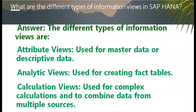What are the different types of information views in SAP HANA? The different types of information views are: Attribute views, used for master data or descriptive data; Analytics views, used for creating fact tables; and Calculation views, used for complex calculations and combining data from multiple sources.